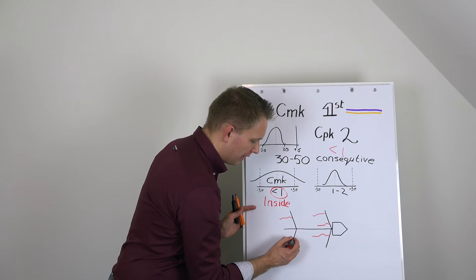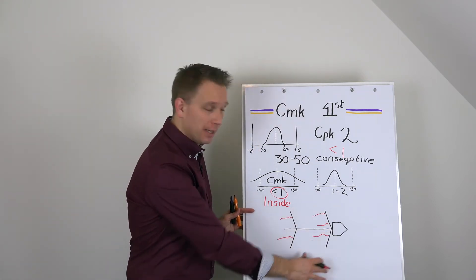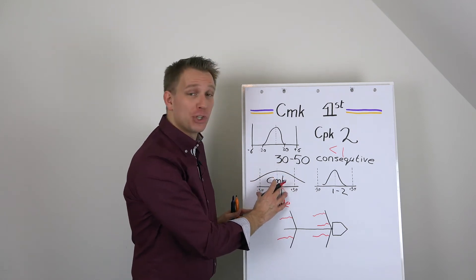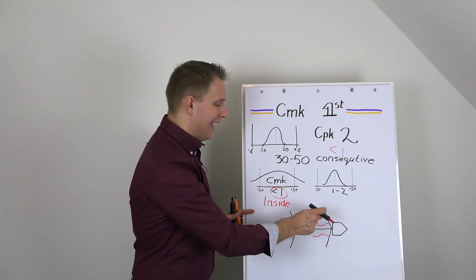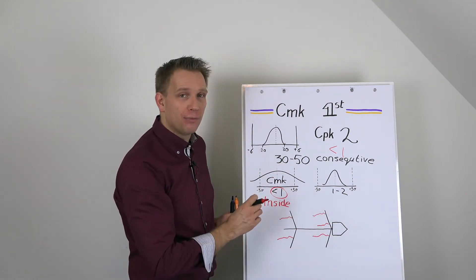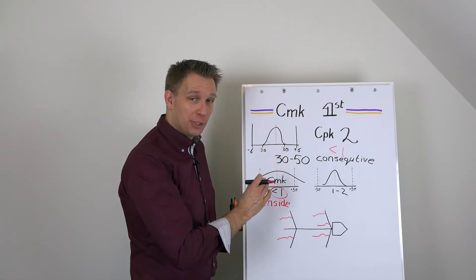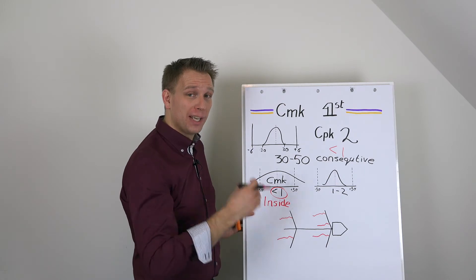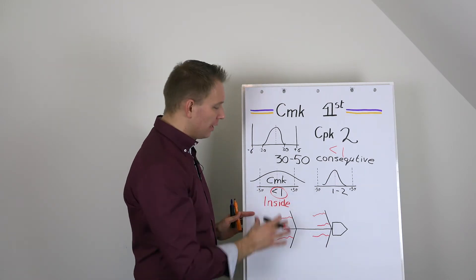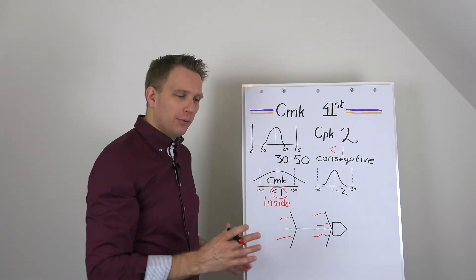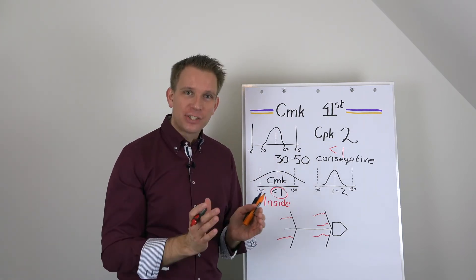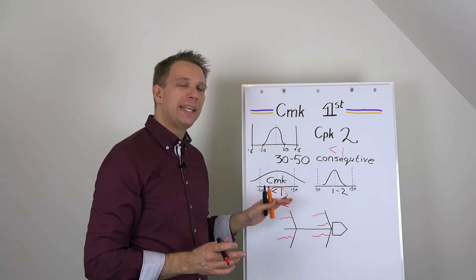These can still be machine causes, material causes, some more machine causes, a person doing something, method causes. They can be still all over the board. Do not think that when the machine capability is low, that it has to be only machine factors that influence this spread. There are really still possible causes in all of our 4Ms. But you do focus on things that are very close to the process, really inside the process. And you can ignore many of the possible factors.